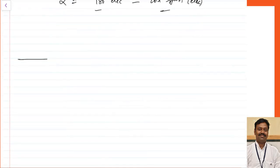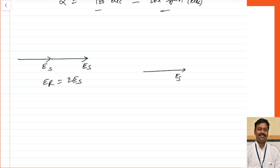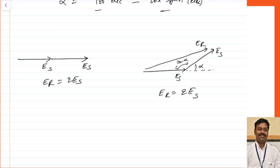Let us see the difference between full pitch and short pitch. In a full pitched coil, if the EMF induced in each conductor is Es, the total EMF equals 2·Es. Whereas in a short pitched coil, instead of Es being in direct opposition, because you are short pitching by angle alpha, the EMF will be shifted by that same angle. Your resultant EMF will be equal to 180 degrees minus alpha. The resultant value of EMF becomes 2·Es·cos(α/2).